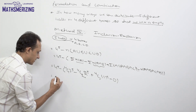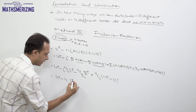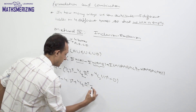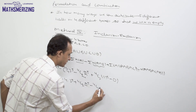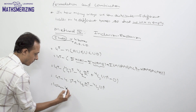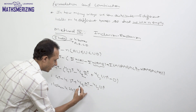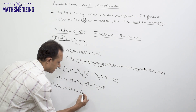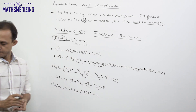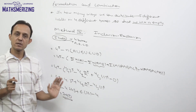Putting it all together: 4⁵ − 4C1 × 3⁵ + 4C2 × 2⁵ − 4C3 × 1⁵ = 1024 − 4 × 243 + 6 × 32 − 4 × 1 = 1024 − 972 + 192 − 4 = 240. So again the answer to this question is 240.